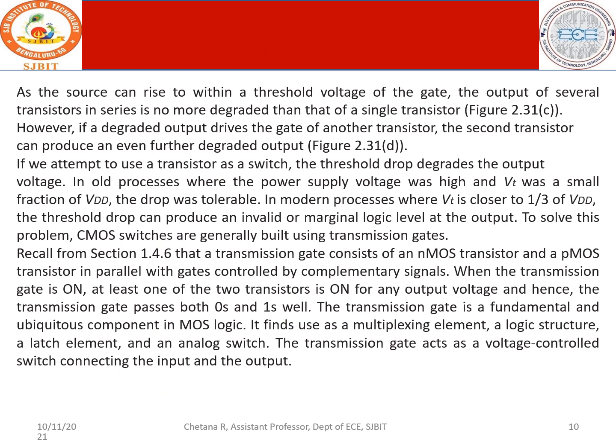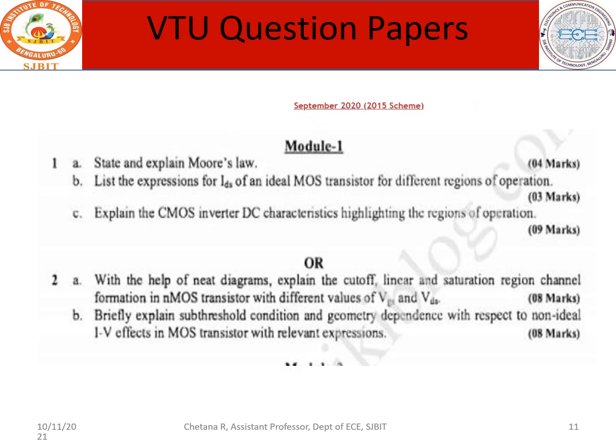This is how the graph gives the understanding. These are questions from the previous question paper for module 1. State and explain Moore's law, which is asked for 4 marks. Moore's law states that every 18 months the number of components fabricated on an IC doubles compared to the previous generation.